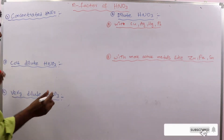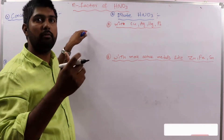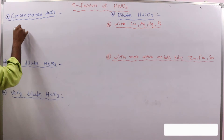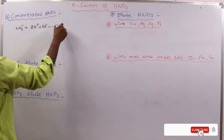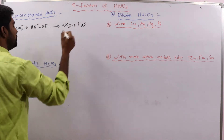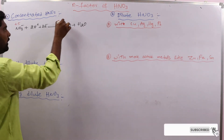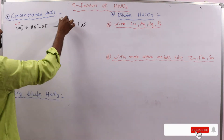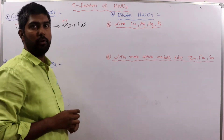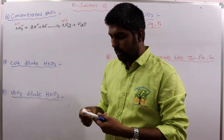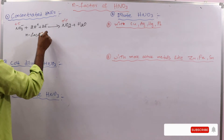For the first case, concentrated HNO3, I will write the ionic equation to calculate the N-factor. The half-reaction is: NO3⁻ + 2H⁺ + 2e⁻ → NO2 + H2O. Here, the oxidation state of nitrogen changes from +5 in the reactant to +4 in NO2. The change in oxidation state is one unit, so the N-factor is equal to 1.